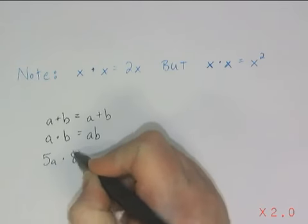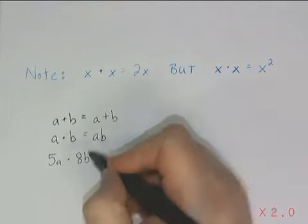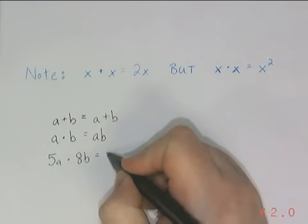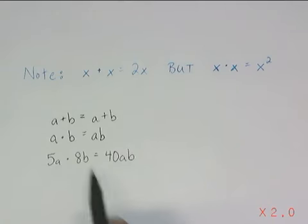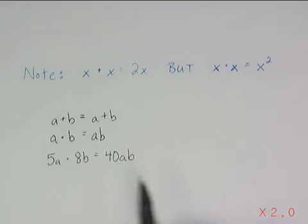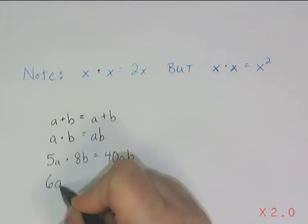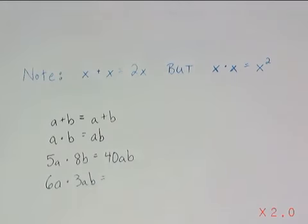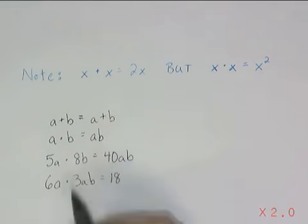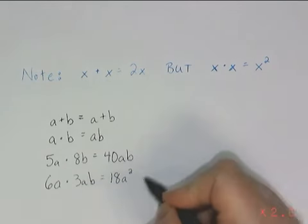You can also start to multiply some terms that become a little bit bigger and more complicated. 5a times 8b — well, 5 times 8 is 40ab. Since these are different variables, all I can do is write them side by side to show they're multiplied. Or 6a times 3ab — that becomes 18, and then a times a gives us a squared, times this b.